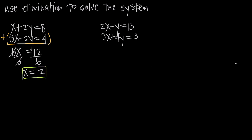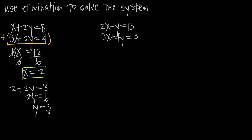We'll plug the value x equals 2 back into our first equation to find the associated value of y. Plugging 2 in for x, we get 2 plus 2y equals 8. Subtracting 2 from both sides, we get 2y equals 6. Dividing both sides by 2, we get y equals 3.